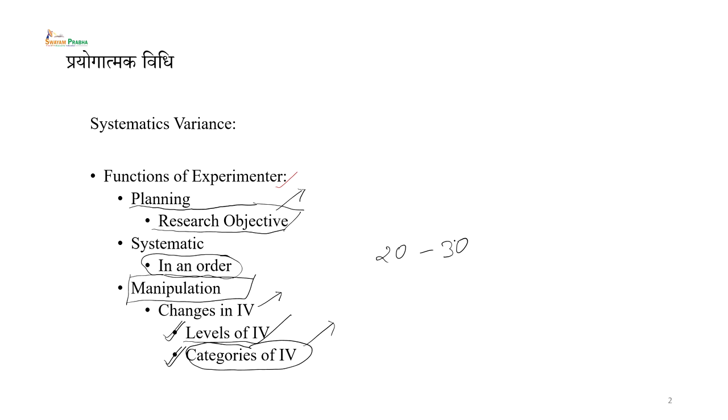जैसे age — एक experimenter किसी participant की age घटा या बढ़ा तो नहीं सकता, लेकिन जब वो sampling करे, sample collect करे, उस समय वो age को पहले से निर्धारित different categories के accordingly select कर सकता है। जैसे पहले ही decide कर ले कि एक category 20 से 30 साल, दूसरी 31 से 40, तीसरी 41 से 50 — और इस प्रकार age को sampling या categorization के माध्यम से manipulate कर पाता है।